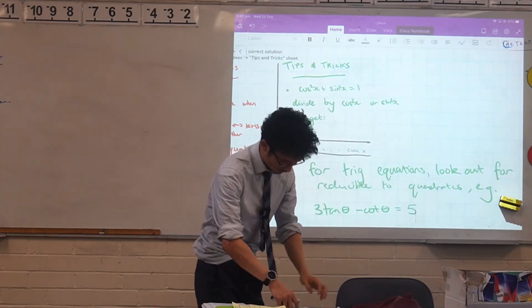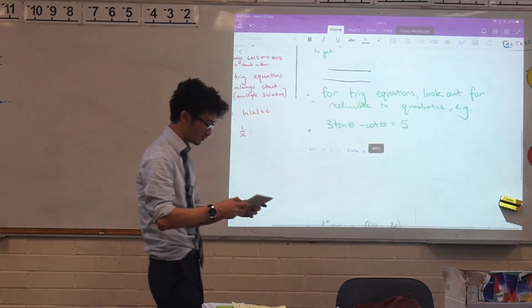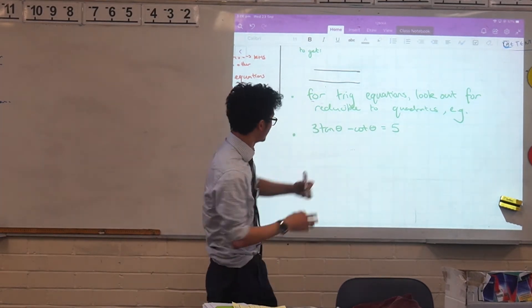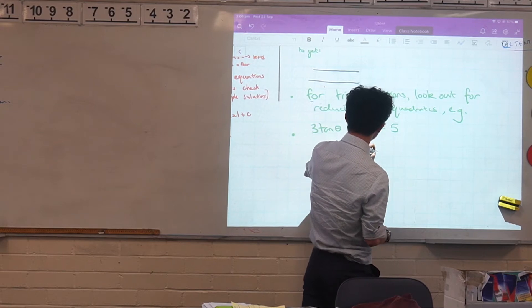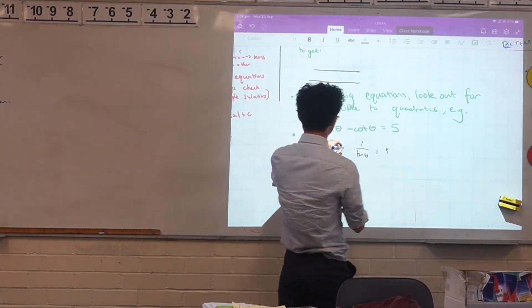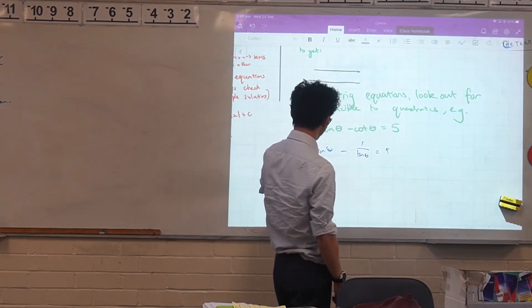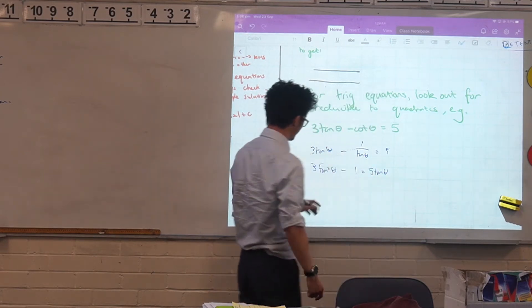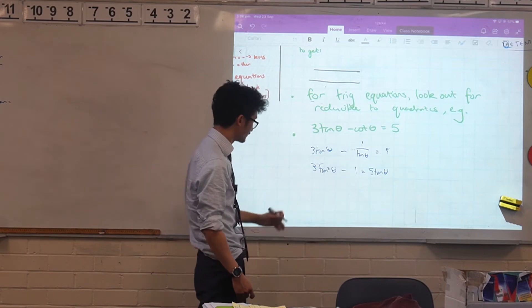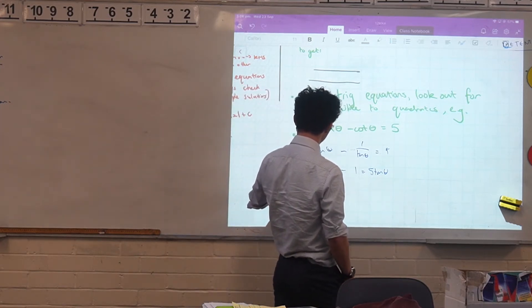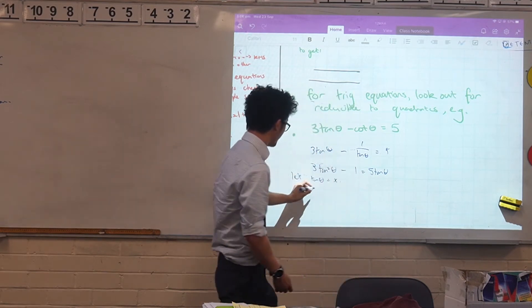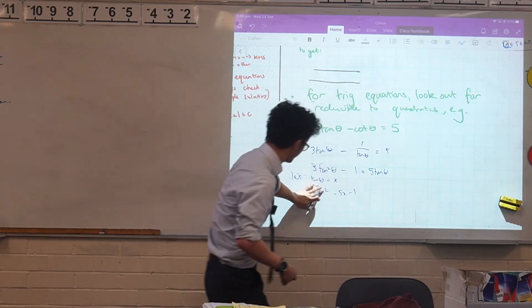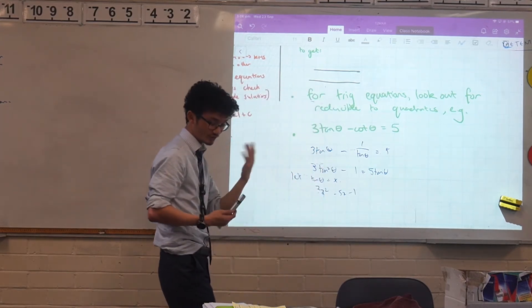Trick equations are another tip and trick here that you can look at. You can look out for ways to make them reducible to a quadratic. So this is an example over here. It looks like, how would you solve something like this? Well, actually cot is just one over tan. And so what you can do is that you can multiply both sides by tan. And then this actually looks like a quadratic because you have something squared, you have something to the power one and you have a constant. And so you can actually let tan theta equal to x or to u or whatever. And then you can solve your quadratic in that way. So that's just one thing to look out for when you're doing trick equations.